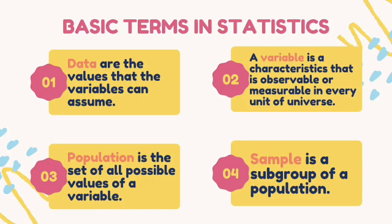For the basic terms in statistics: data are the values that the variables can assume. A variable is a characteristic that is observable or measurable in every unit of universe. Population is the set of all possible values of a variable, and a sample is a subgroup of a population.